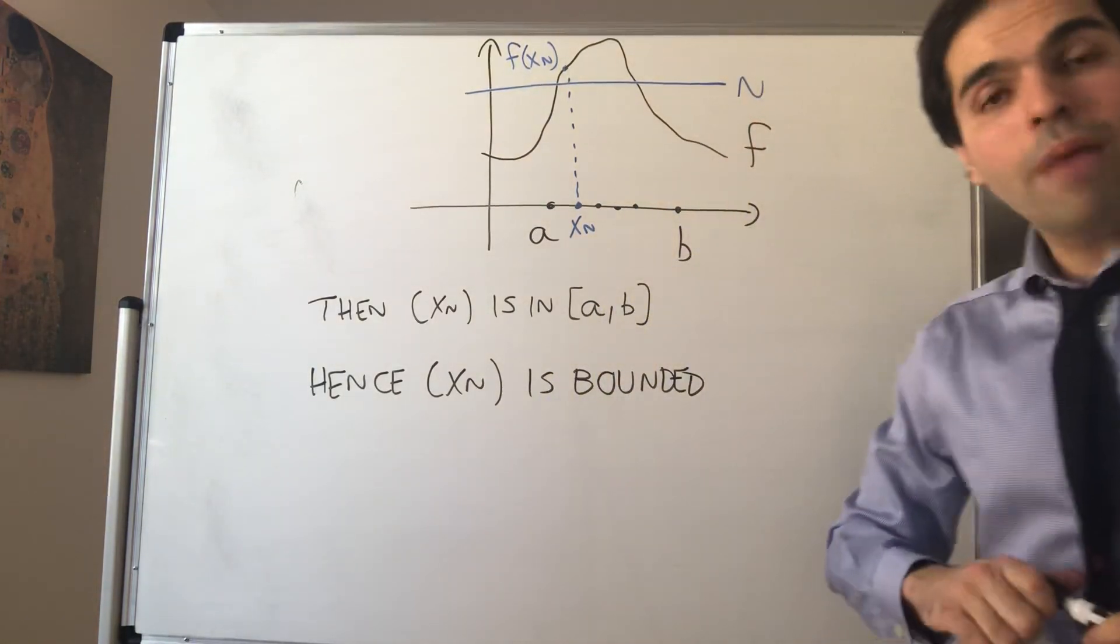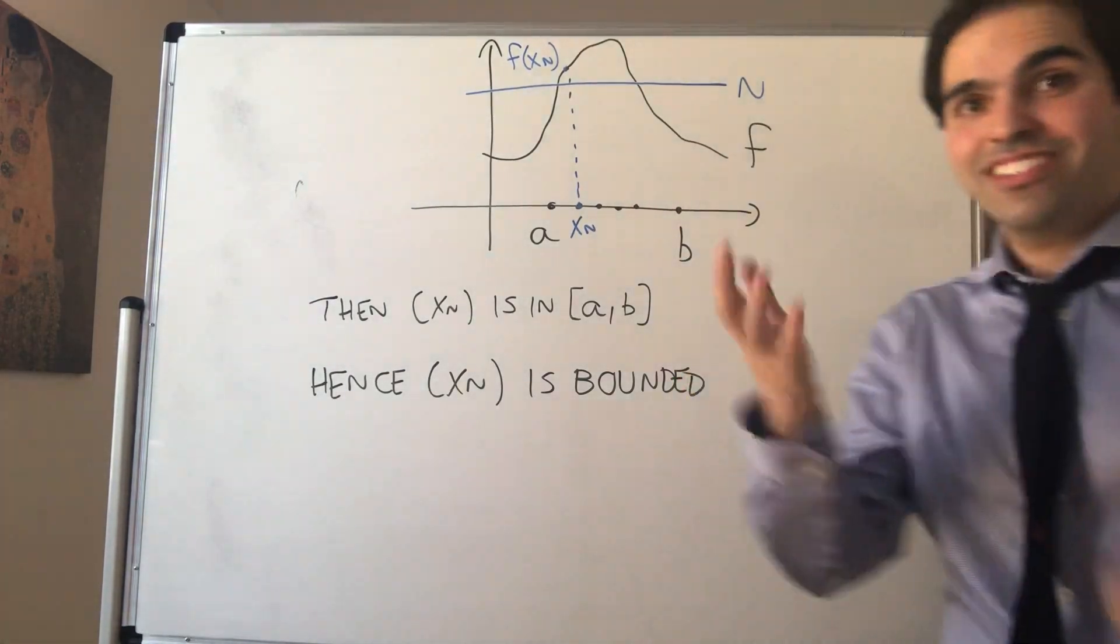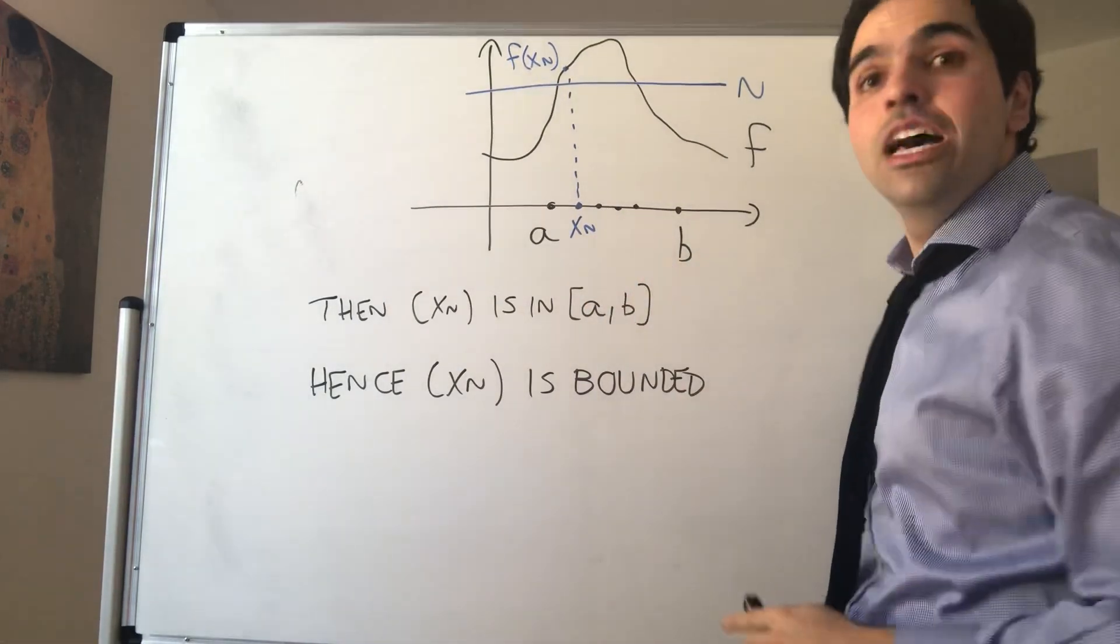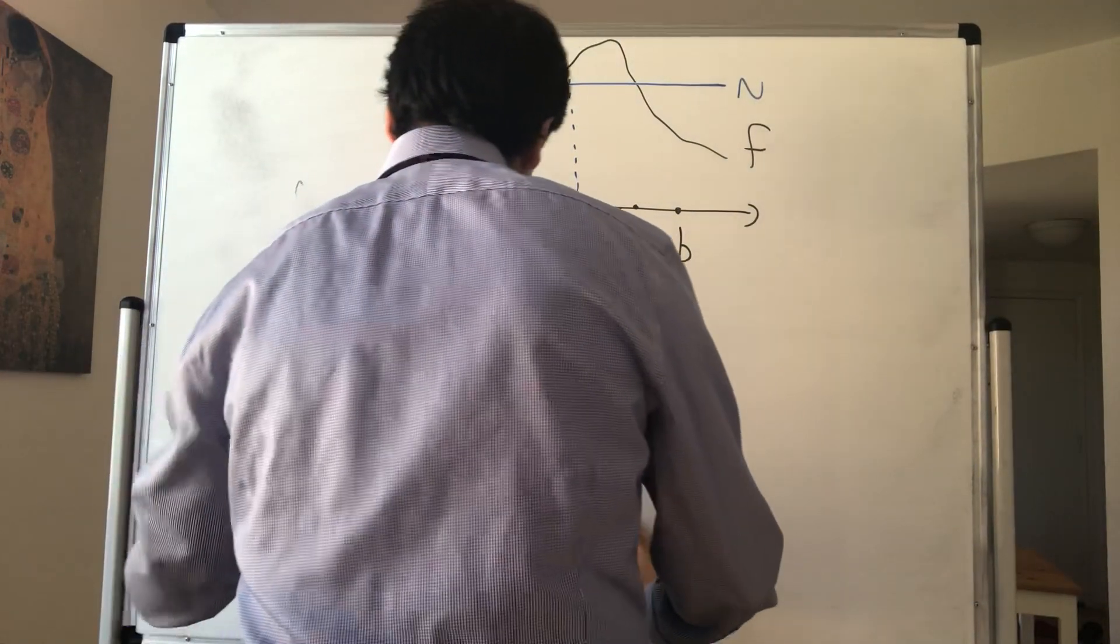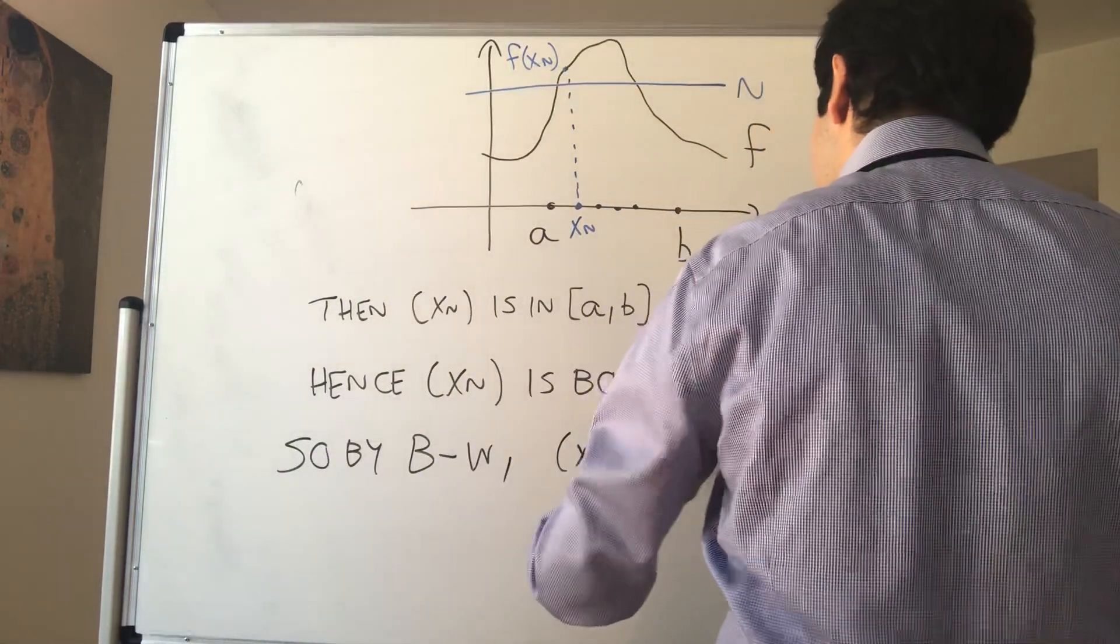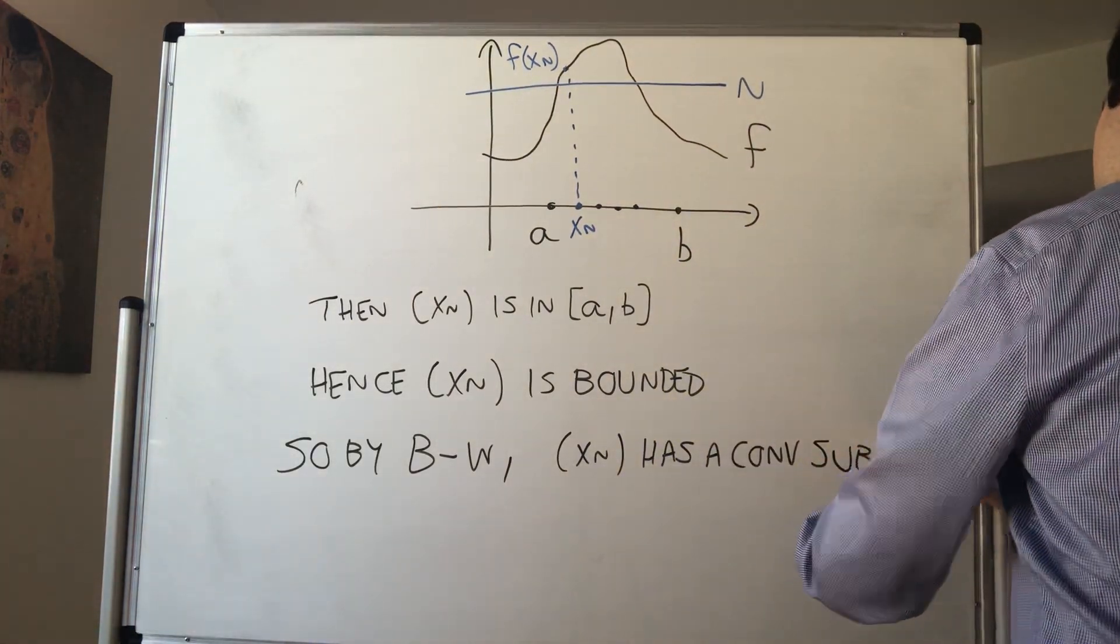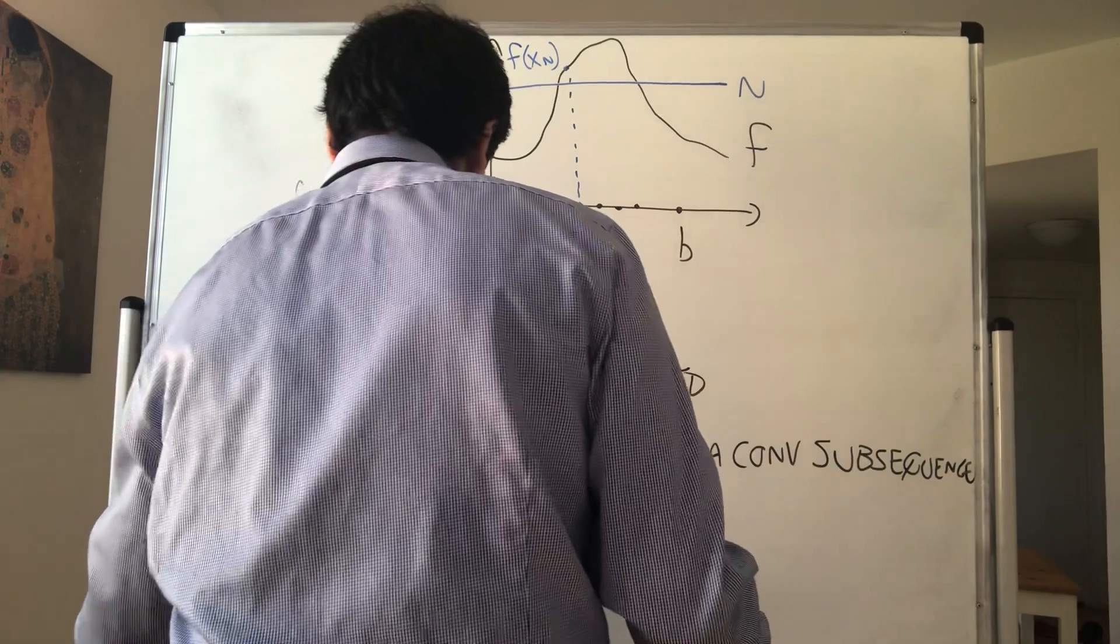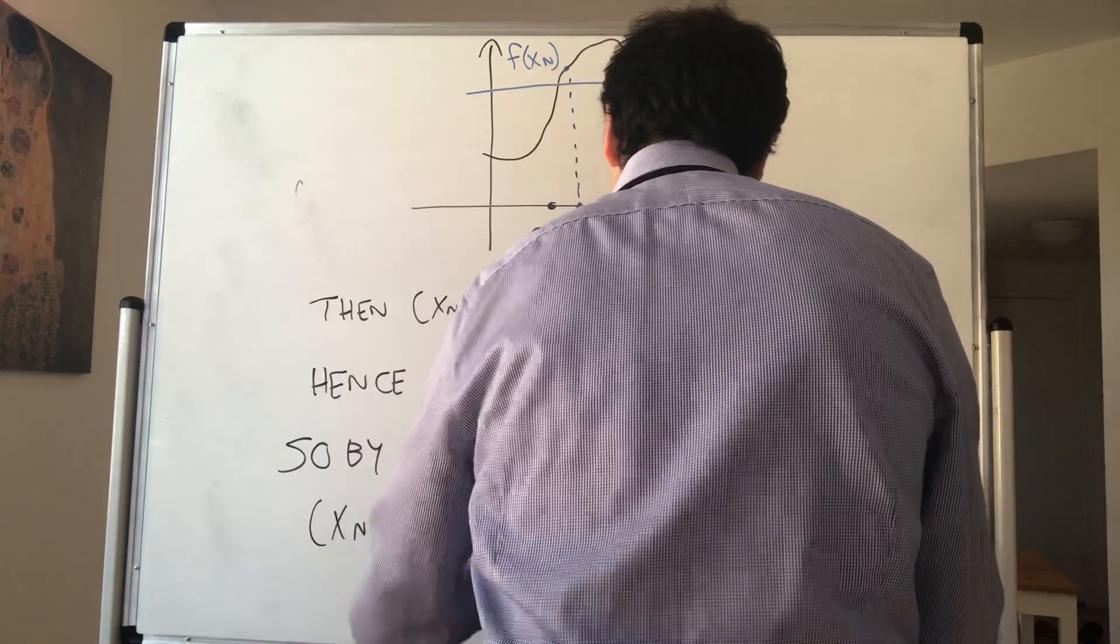But what do you know about bounded sequences in R? Bolzano-Weierstrass. So because we have a bounded sequence in the real numbers, xₙ must have a convergent subsequence. So by Bolzano-Weierstrass, xₙ has a convergent subsequence. And let's call it xₙₖ, with xₙₖ converging to x₀.